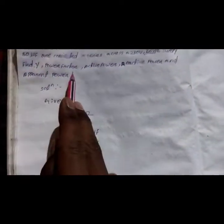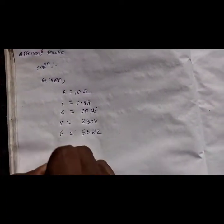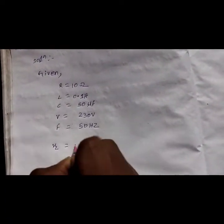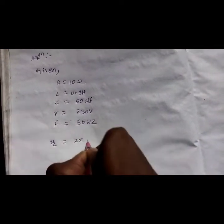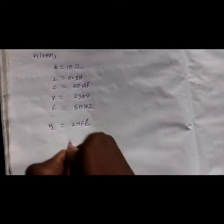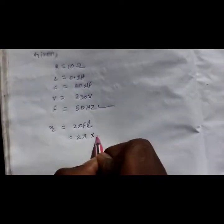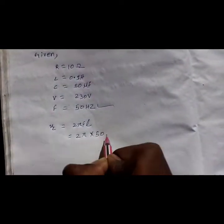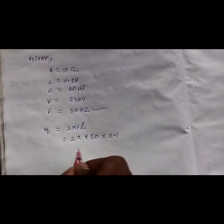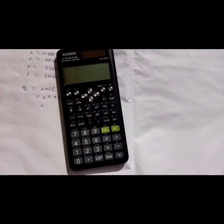First, find XL. We know XL = 2πfL, so equal to 2π into frequency 50 Hz into inductance L = 0.1 henry. By using a scientific calculator, XL = 31.41 ohm.